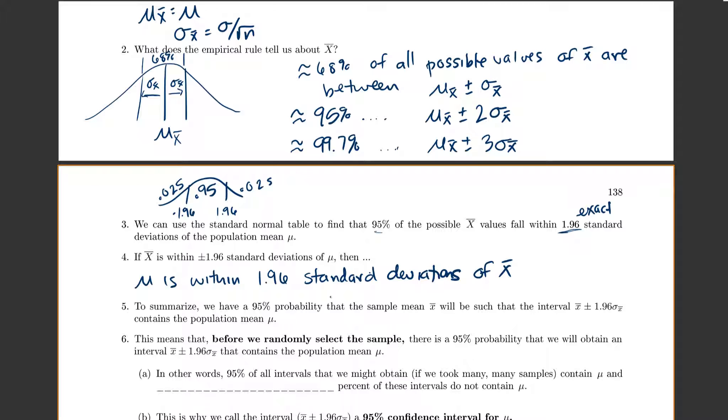So to summarize, we have a 95% probability that our sample mean that we pick will be such that the interval x-bar plus or minus 1.96 standard deviations contains the population mean mu. So that means, coming back up to my picture up here, if I was to pick an x-bar value like right there, then it would be pretty close to my mean mu. But I might also pick an x-bar value way out in the corner. And is it going to be very close to my mean mu? No.